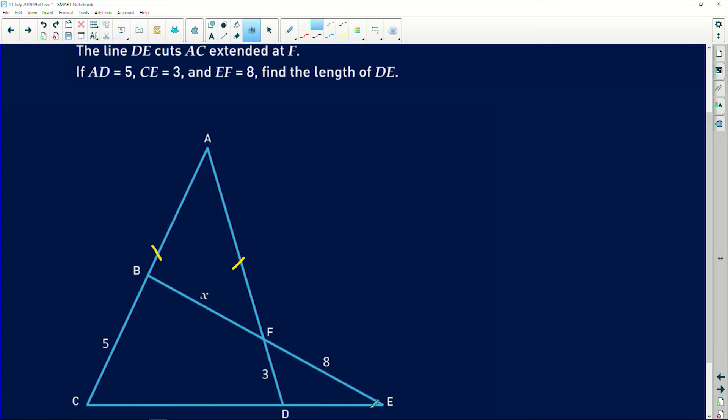Lastly, it says if AD is equal to 5. This is all completely labeled wrong. Basically, it's meant to say that BC is equal to 5, EF is equal to 8, and FD is equal to 3. Find the length of BF. So we need to find this length X over here.